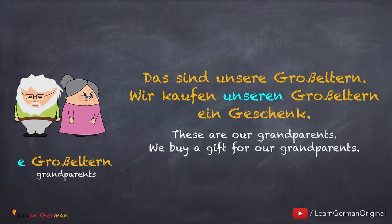Das sind unsere Großeltern. Wir kaufen unseren Großeltern ein Geschenk. Since 'Großeltern' is plural, in the dative object we would use 'unseren'. And why don't we use an extra 'n' at the end of the noun? Because the plural form already has that 'n' at the end.